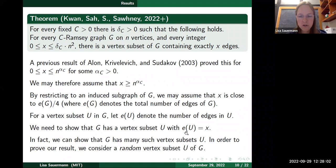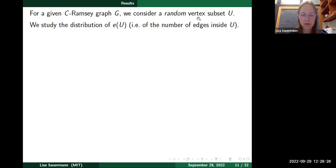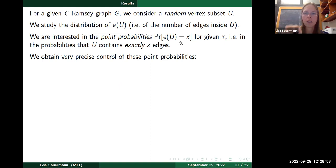Rather than explicitly constructing U, we consider a uniform random vertex subset U of g and give a lower bound on the probability that e(U) equals x. To establish the conjecture it suffices to show this probability is strictly positive. So we study the distribution of the random variable e(U) — g is given, the randomness comes from the random vertex subset U — and in particular we are interested in the point probabilities that e(U) equals x for each given integer x.